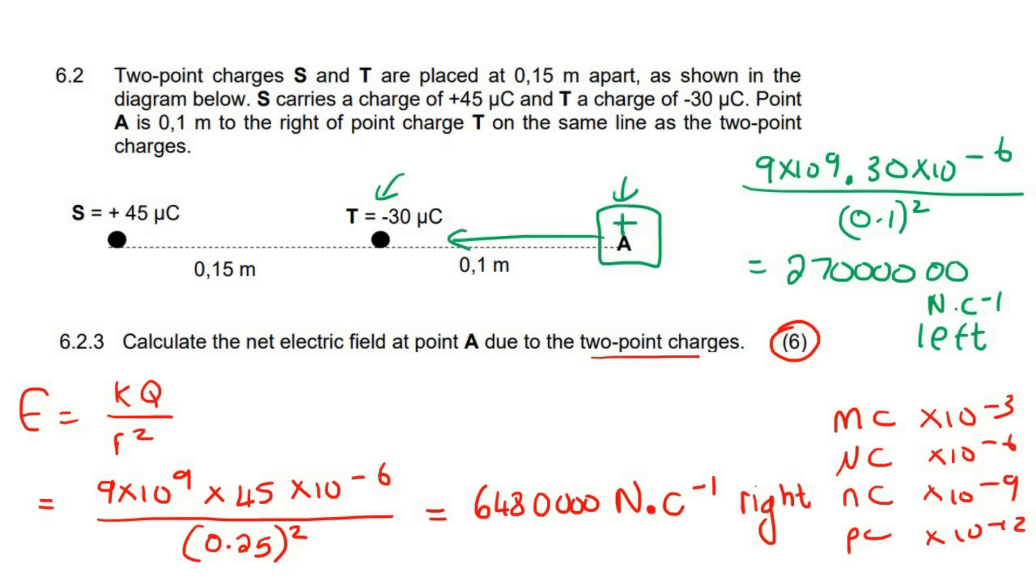So now we can go work out the net effect. And we can just say to the right is positive, for example, or you can say to the left, it doesn't really matter. Let's say to the right. So then you're going to say this one minus because this one's going left. And then if you had to go calculate that, you end up with a negative answer. 2,052,000 N·C.